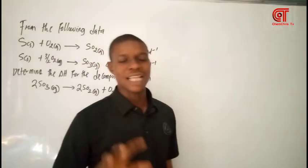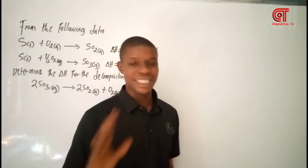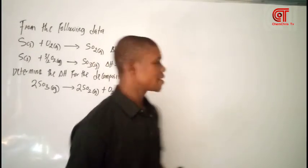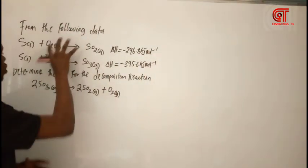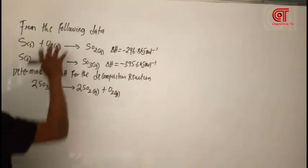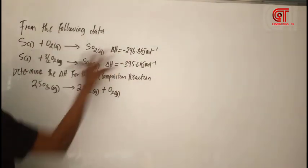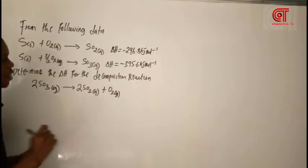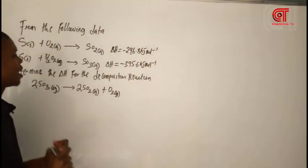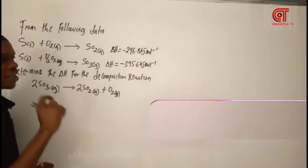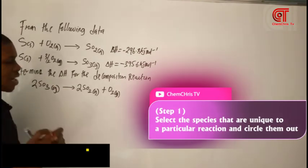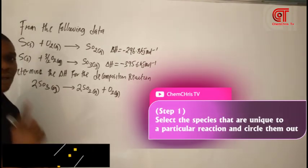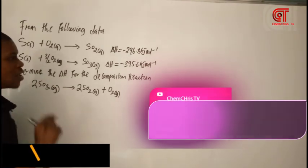We are going to start with a simple one. We are starting with one that has about two equations. So the first thing you want to do here is to select the species that are unique to a particular root reaction. That is the first step.